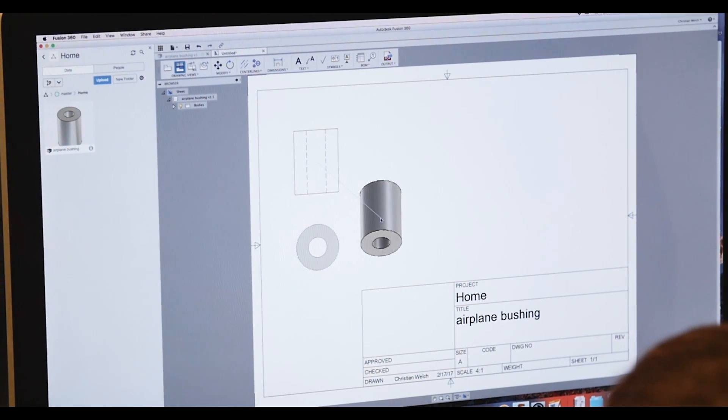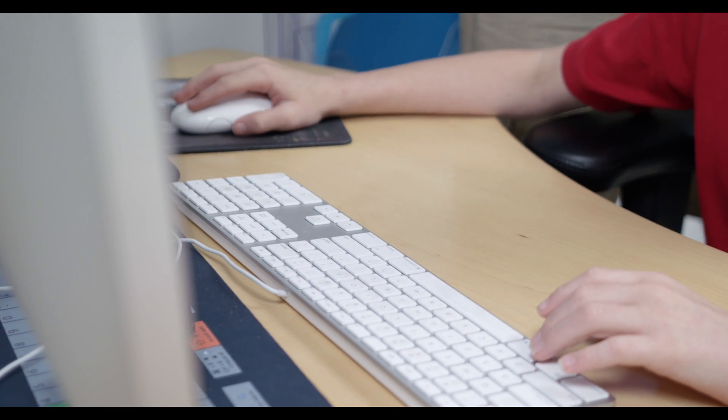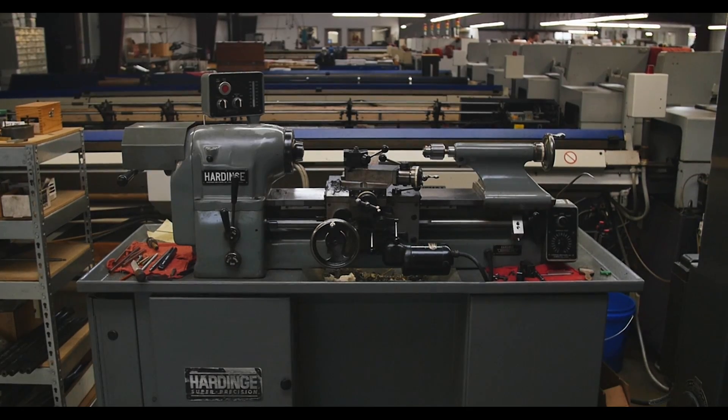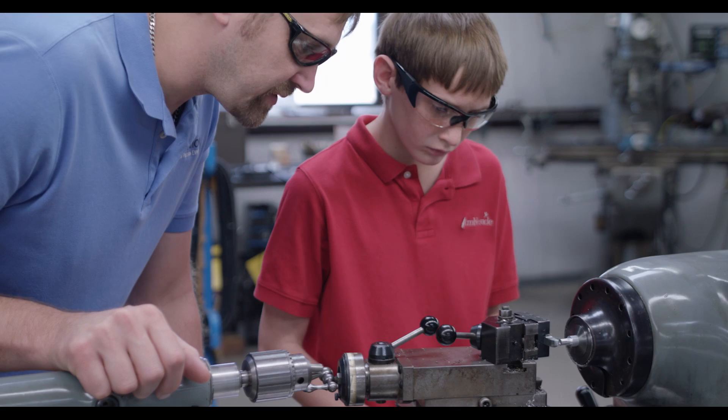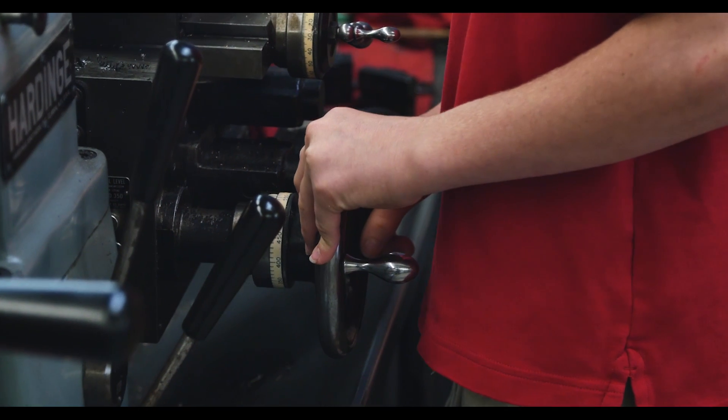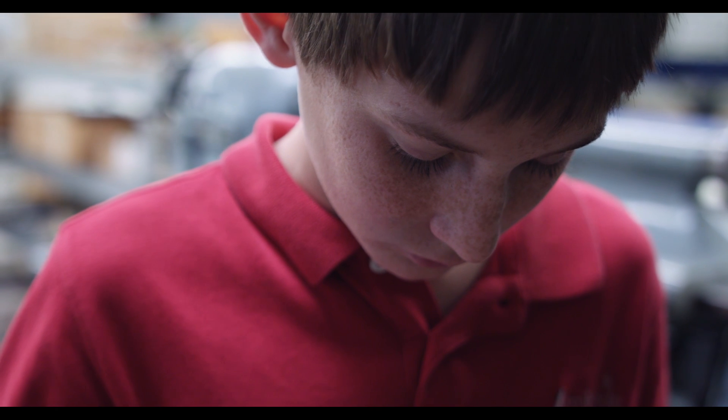When my son comes to me and says I need a bushing for my airplane, he's able to go in Fusion 360 at 12 years old and model the parts, do the drawings, and then we take the drawing together, go out to the machine, pick the drills out, put the material in the machine. He ends up making his own part that he needed, that he lost for his model airplane.